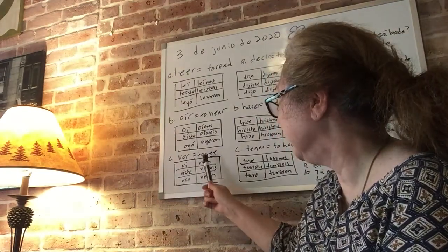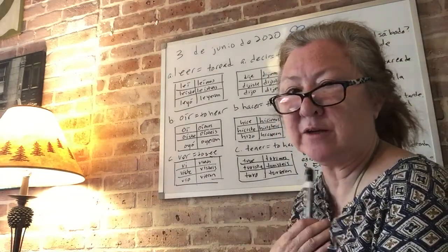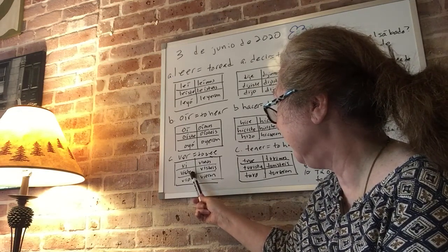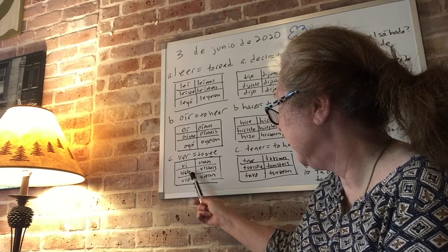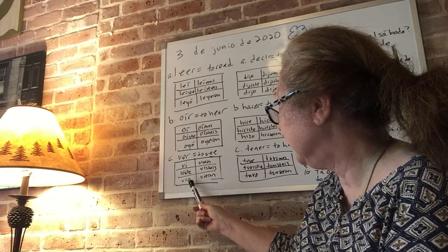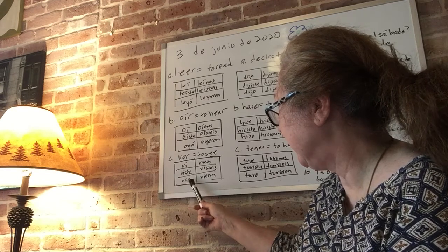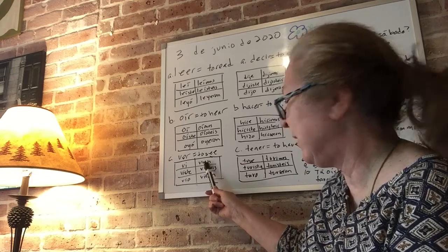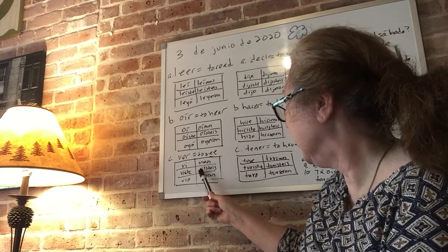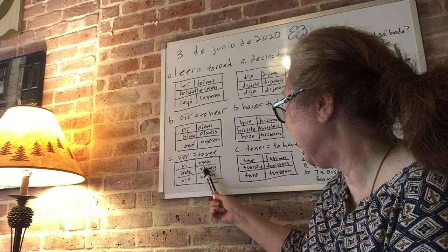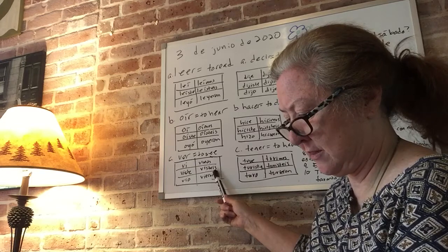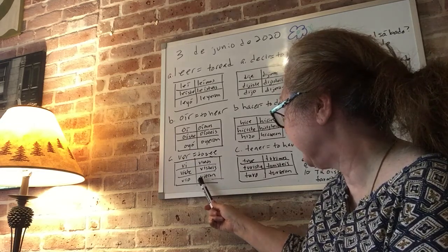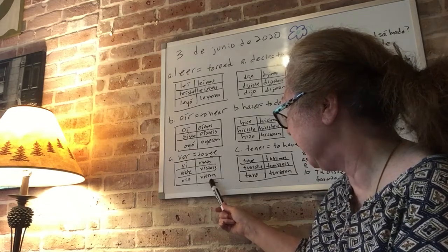Ver means to see. There are no accents on ver. The preterite: yo vi, V-I. Tú viste, V-I-S-T-E, no accent. Él, ella, usted vio, V-I-O, no accent. Nosotros, nosotras vimos, V-I-M-O-S. Vosotros, vosotras visteis, V-I-S-T-E-I-S. And ellos, ellas, and ustedes vieron, V-I-E-R-O-N, no accent.